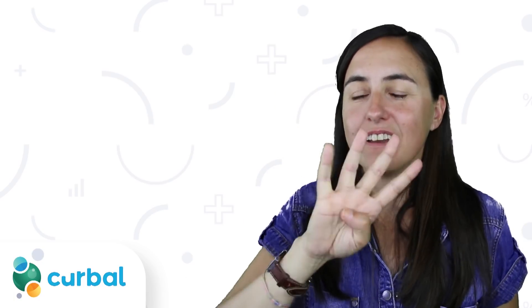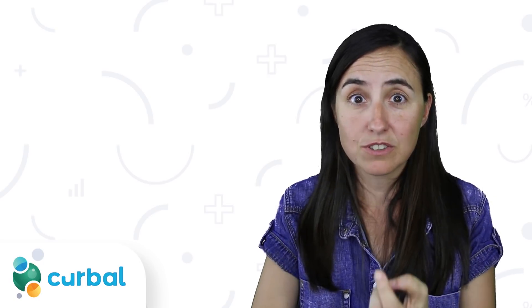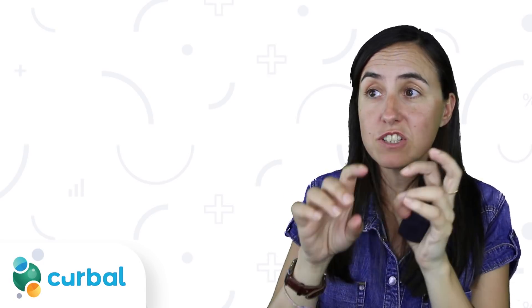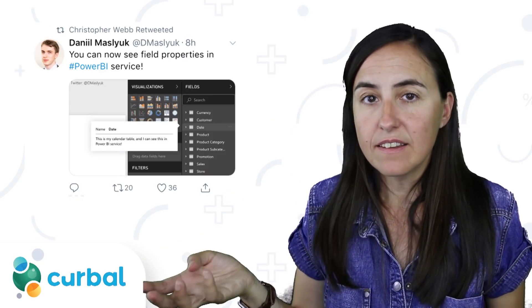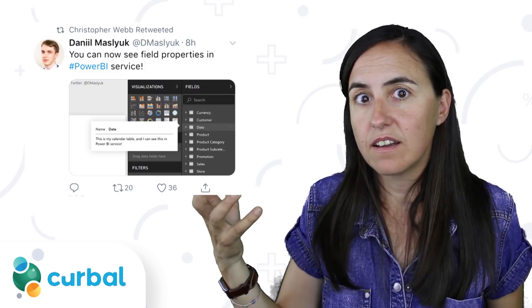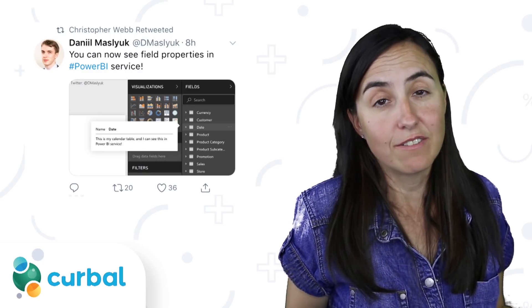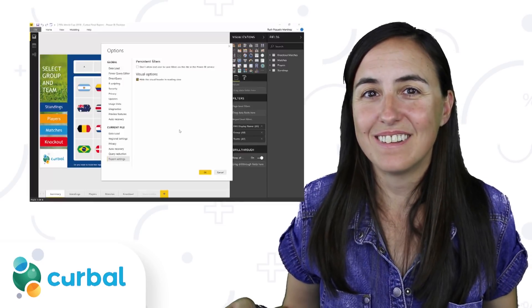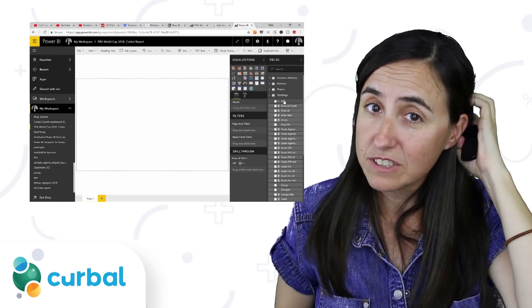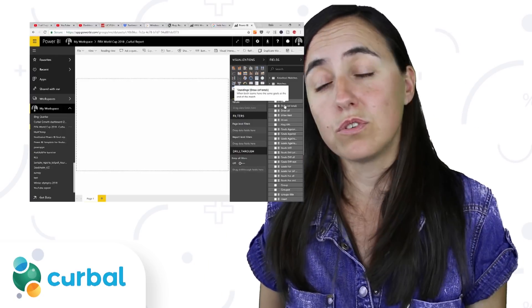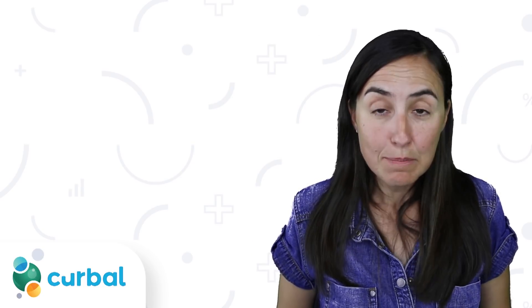Tip number four. First of all, in Power BI Desktop, you can actually document columns and measures. We talked about that before. You can write, this measure calculates the sum of sales for Spain. And you could see those comments in Power BI Desktop, but you couldn't see them in Power BI Server. But you can do that now. They are available there, which is really useful. Document as much as you can your models, you will help the users tremendously.